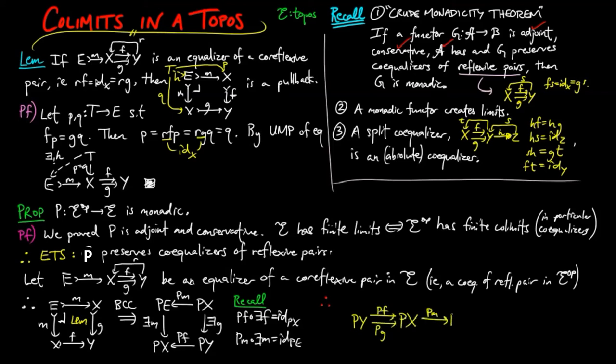the following diagram is a split co-equalizer. Since Pm composed with Pf is equal to Pm composed with Pg, this follows from P being a functor and preserving commuting diagrams.